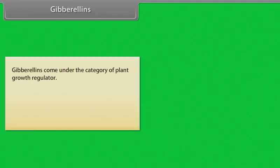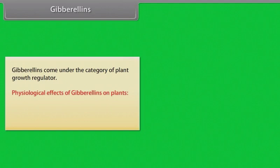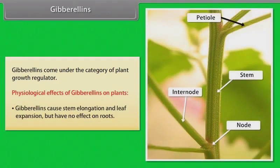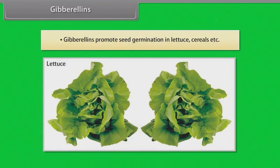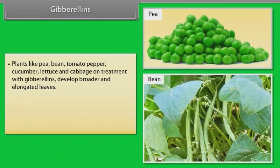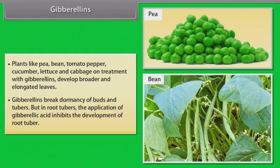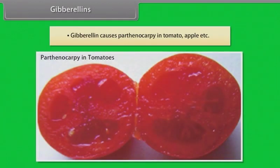Gibberellins come under the category of plant growth regulators. Physiological effects of gibberellins on plants: Gibberellins cause stem elongation and leaf expansion but have no effect on roots. Gibberellins promote seed germination in lettuce, cereals, etc. Plants like pea, bean, tomato, pepper, cucumber, lettuce and cabbage, on treatment with gibberellins, develop broader and elongated leaves. Gibberellins break dormancy of buds and tubers. But in root tubers, the application of gibberellic acid inhibits the development of root tubers. Gibberellins cause parthenocarpy in tomato, apple, etc.